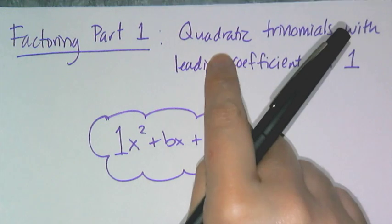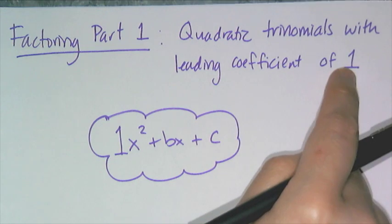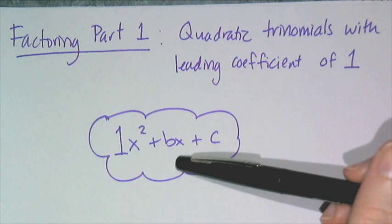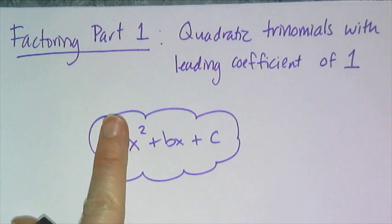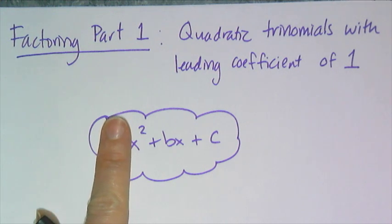We have the special case of quadratic trinomials with leading coefficients of 1. So that means I'm looking at quadratics that are 1x squared plus bx plus c, and of course you remember I usually don't write that 1, so we're looking at specifically factoring quadratic trinomials that are x squared plus bx plus c, not 2x squared or 3x squared, but 1 little x squared.